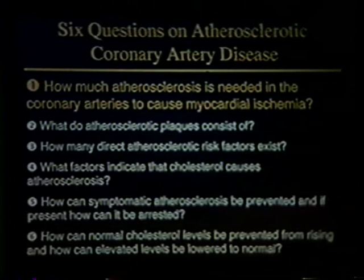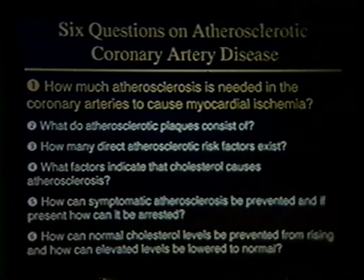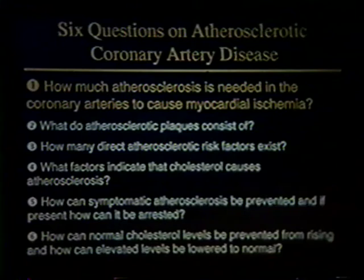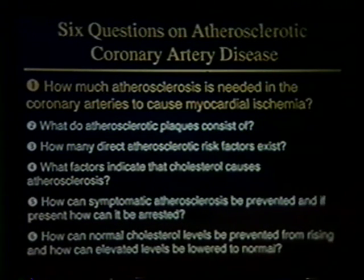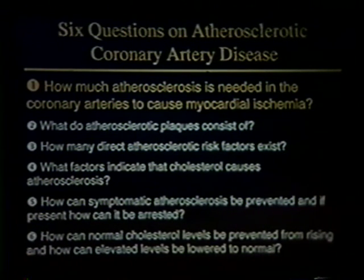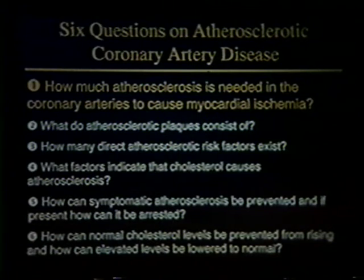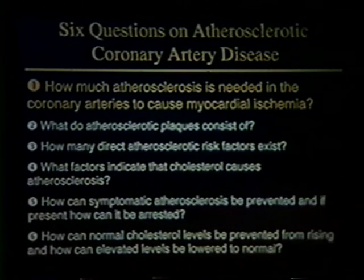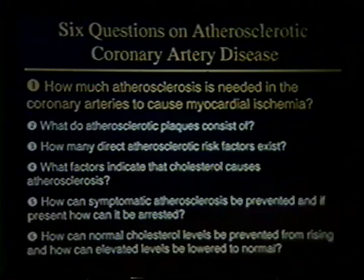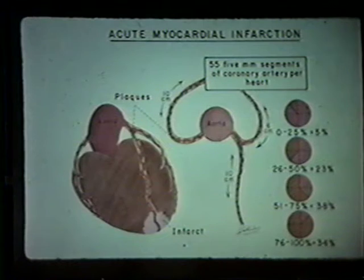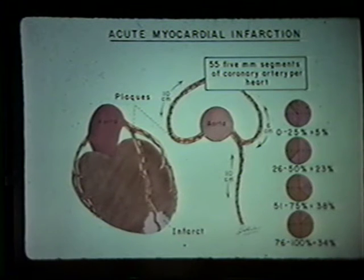What I'd like to do in this presentation is to try to answer six questions. Question one: how much atherosclerosis is needed in the coronary arteries to cause myocardial ischemia? In other words, how bad is the process before we have trouble from it? If we look at coronary angiograms, you get one answer. If you look at intravascular ultrasonic imaging, you get another answer. If you look at the autopsy table, this is the answer you get.